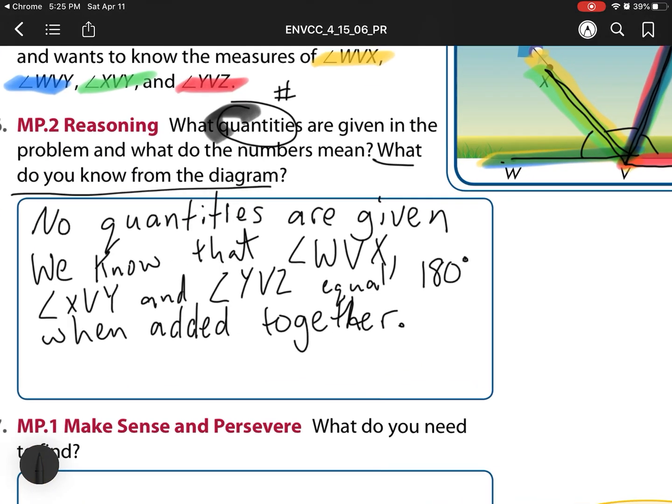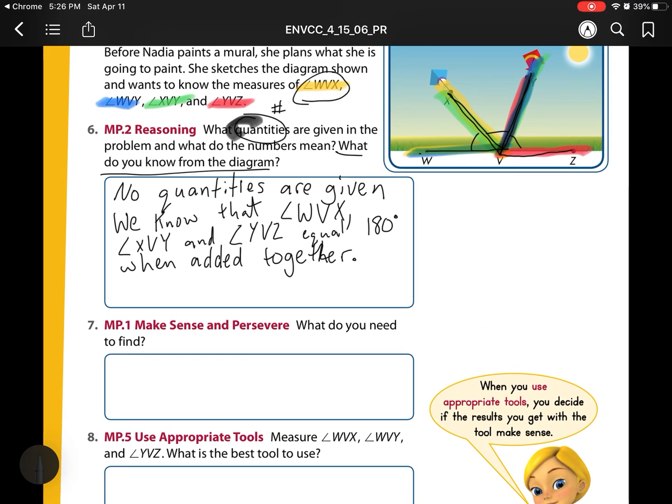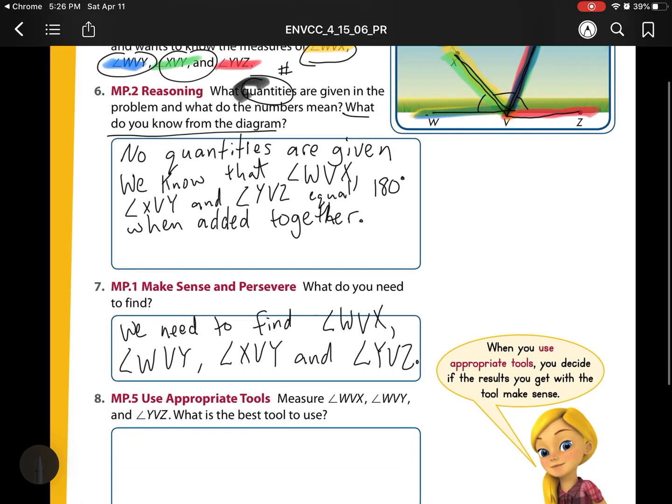All right. So now number seven, what do we need to find? What we need to find are these missing angles. So we need to find, in a complete sentence, and then we're going to list those four angles: angle WVX, angle WVY, angle XVY, and angle YVZ.